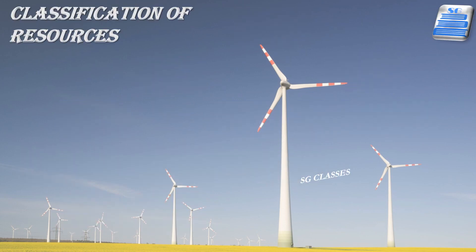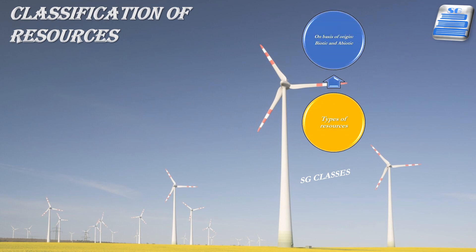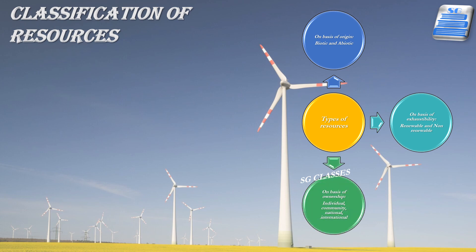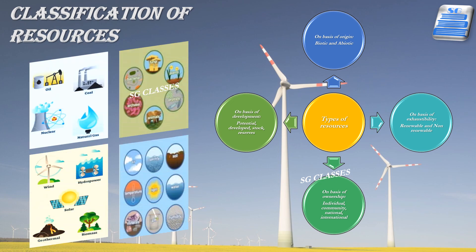On the basis of origin, resources are biotic and abiotic. On the basis of exhaustibility, they are renewable and non-renewable. On the basis of ownership, they are individual, community, national and international. On the basis of development, they are potential, developed, stocks and reserves.